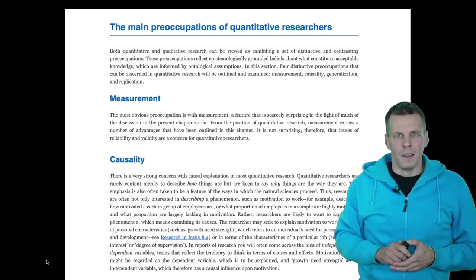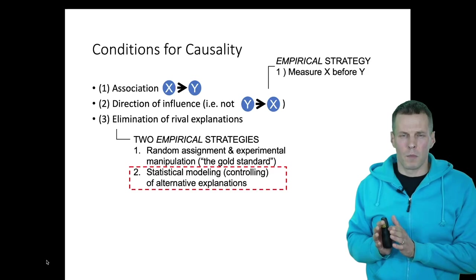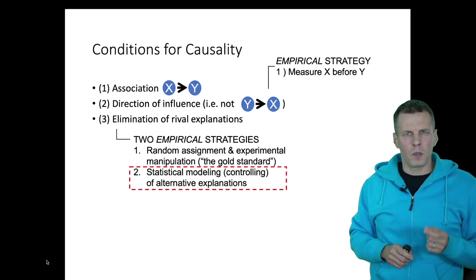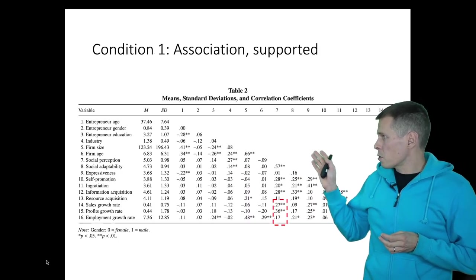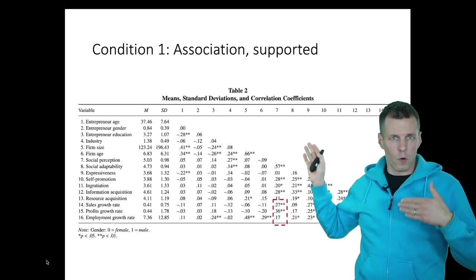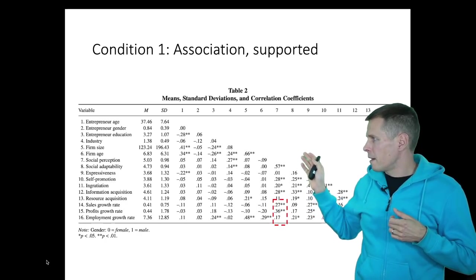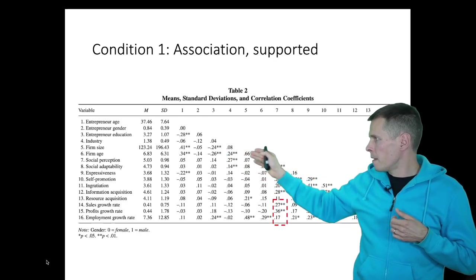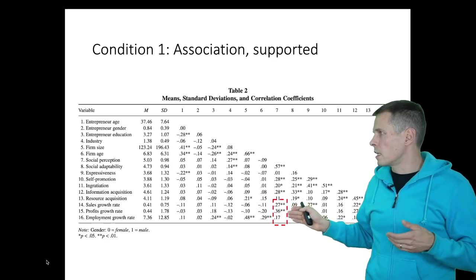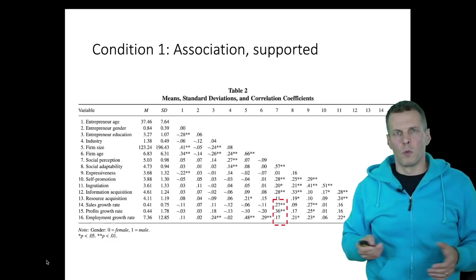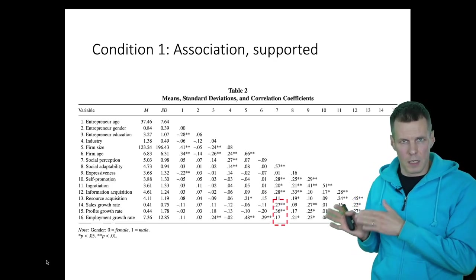Then there's causality. In observational studies, causality can be addressed using control variables or statistical modeling. Let's look at how they deal with the three conditions. The first condition is association — focusing on social perception, you check association from a correlation table. Table 2 is the correlation table, and you should always look at it first. Social perception is on row seven, and we can see that sales growth and profit growth are statistically significantly associated with social perception, but employment growth is not. So association is supported for two of the three growth variables.